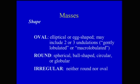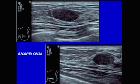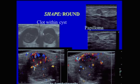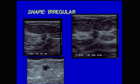Here's an example of an oval mass in two projections. Three different cases of round masses are shown, where in both projections the masses are round: one is a papilloma, one is a clot within a cyst, and one is a new metastatic lymphadenopathy. Irregular is when the mass is neither round nor oval — three different examples of irregular masses are shown.